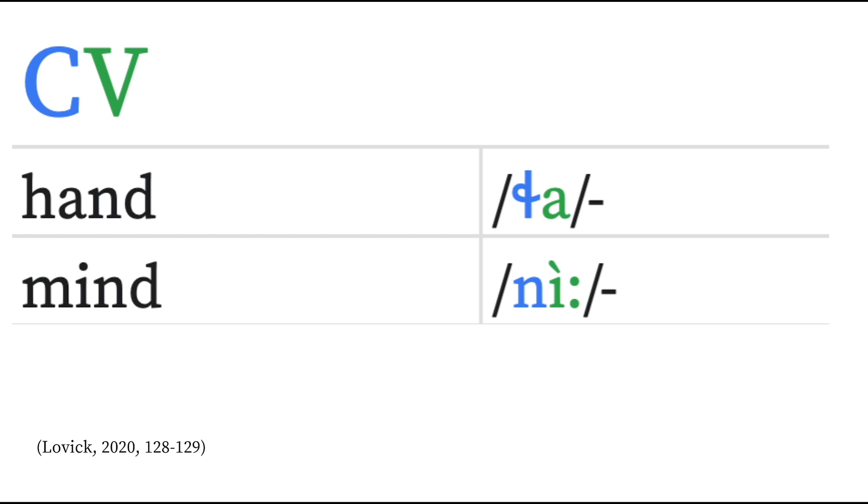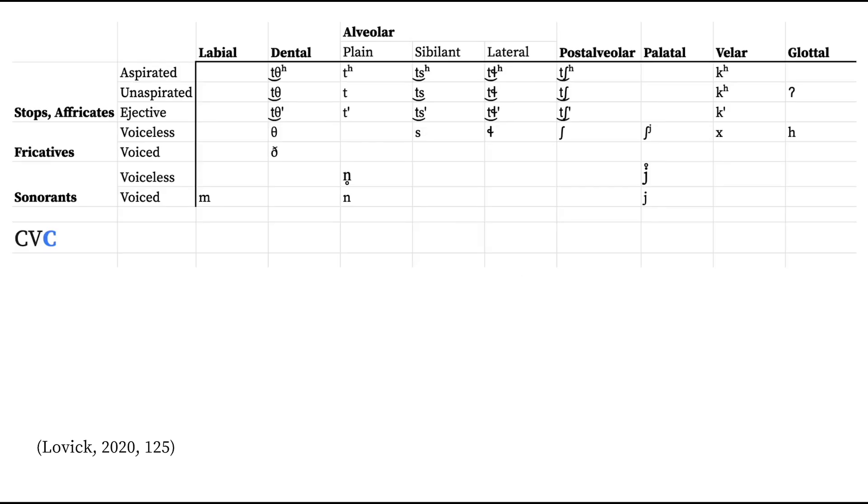Codas aren't required. Many prefixes and incorporated roots lack codas altogether. However, because stems are bimoraic, unmarked stems must have a coda.